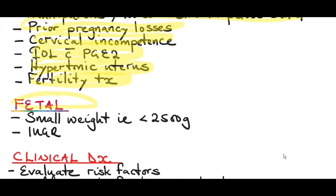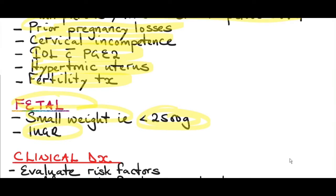The fetal risk factors include small birth weight, especially babies less than 2,500 grams, and intrauterine growth retardation. As you can see from the risk factors, precipitate labor is usually due to the combined effect of having hyperactive uterine contractions, reduced soft tissue resistance, an incompetent cervix, as well as having a small fetus.